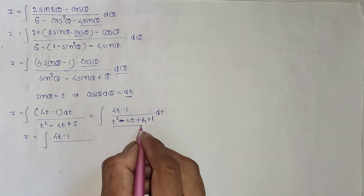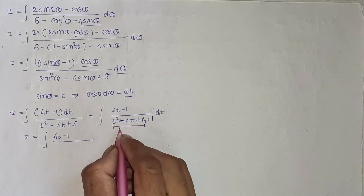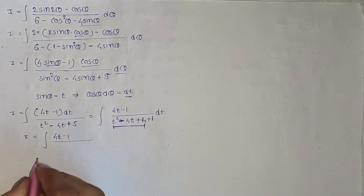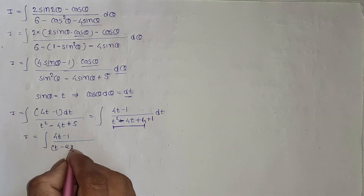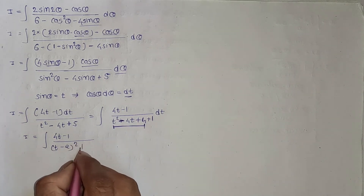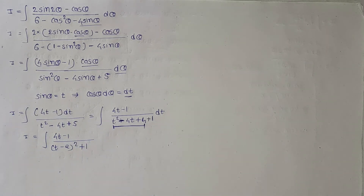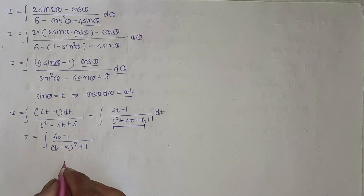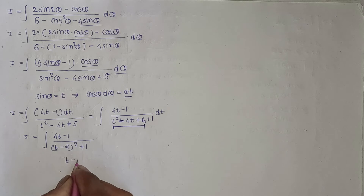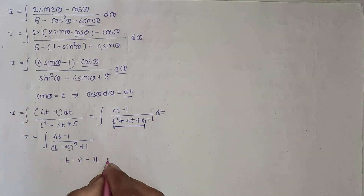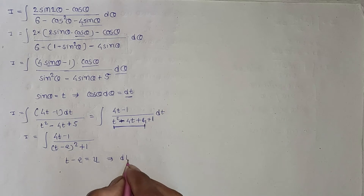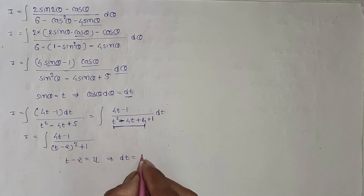Now rewrite the numerator: 4t minus 1 as 4t minus 4 plus 4 plus 5 becomes... and the denominator t squared minus 4t plus 5 is the perfect square polynomial t minus 2 whole square plus 1.